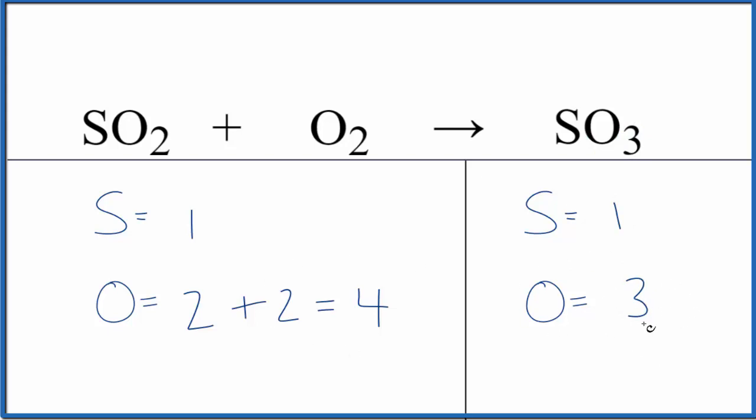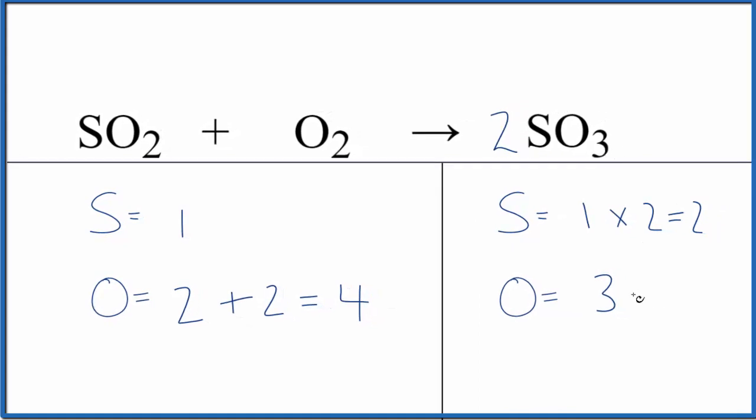I'd like to get this to be an even number. So if I multiply the SO2 by two, the coefficient of two, one times two, that'll give me two sulfurs and three times two, that'll give me six. But six is an even number, so I can work with that.